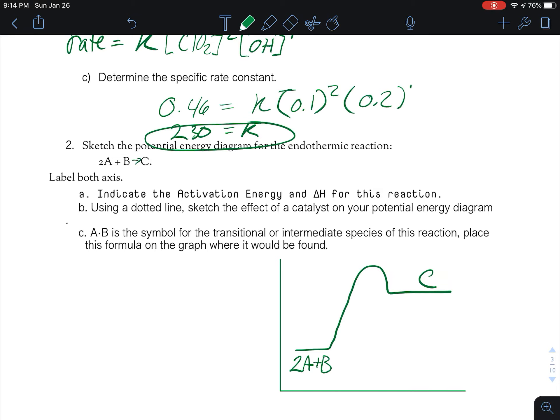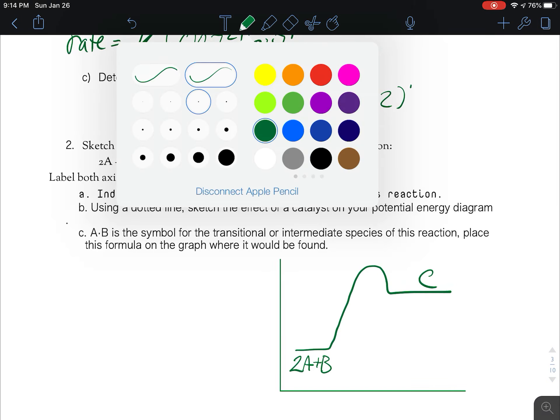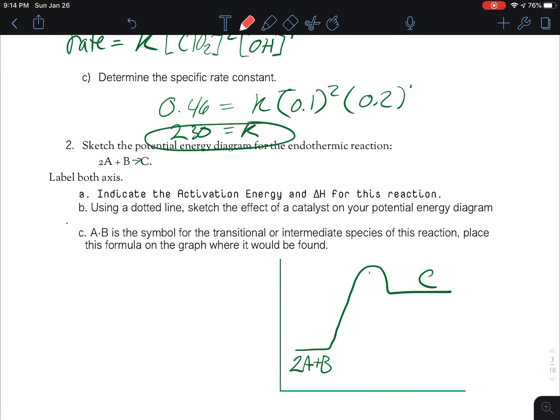Down here we have 2a plus b. Up here we have c. I'm going to assume this is an arrow. Indicate the activation energy and delta h of this reaction. So this is going to be our activation energy. Our delta h is going to be this value here, the difference between the potential energy. This is going to be our potential energy. This is our reaction coordinate. That's what it means by sketch.